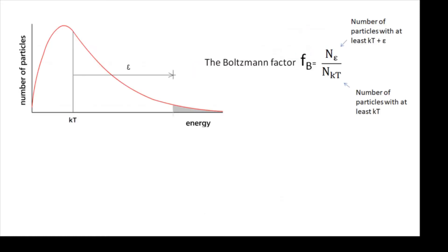So let's get mathematical now. There's a quantity called the Boltzmann Factor, F with a subscript B, FB. Now what is the Boltzmann Factor? It's a fraction. It's a fraction of the particles that have this additional energy. It's the number of particles which have the additional energy divided by the number of particles which have at least average energy. So it's N epsilon over N KT. Looking at the graph, it's the particles in the shaded area divided by the particles from KT onwards. So it's N epsilon over N KT, the number of particles with at least KT plus epsilon over the number of particles with at least KT.